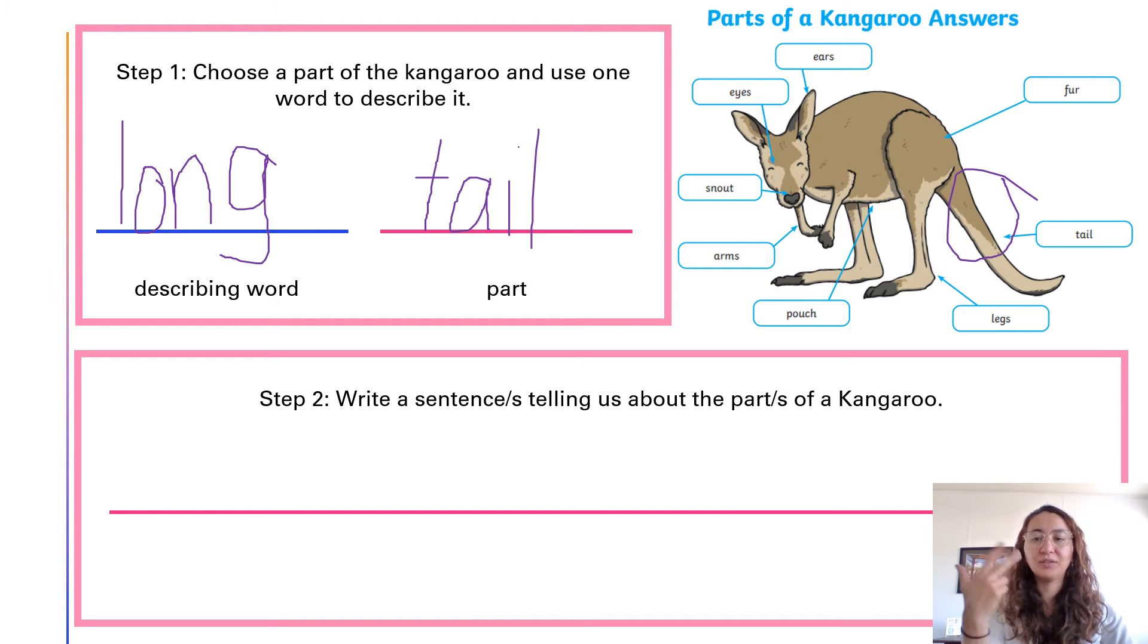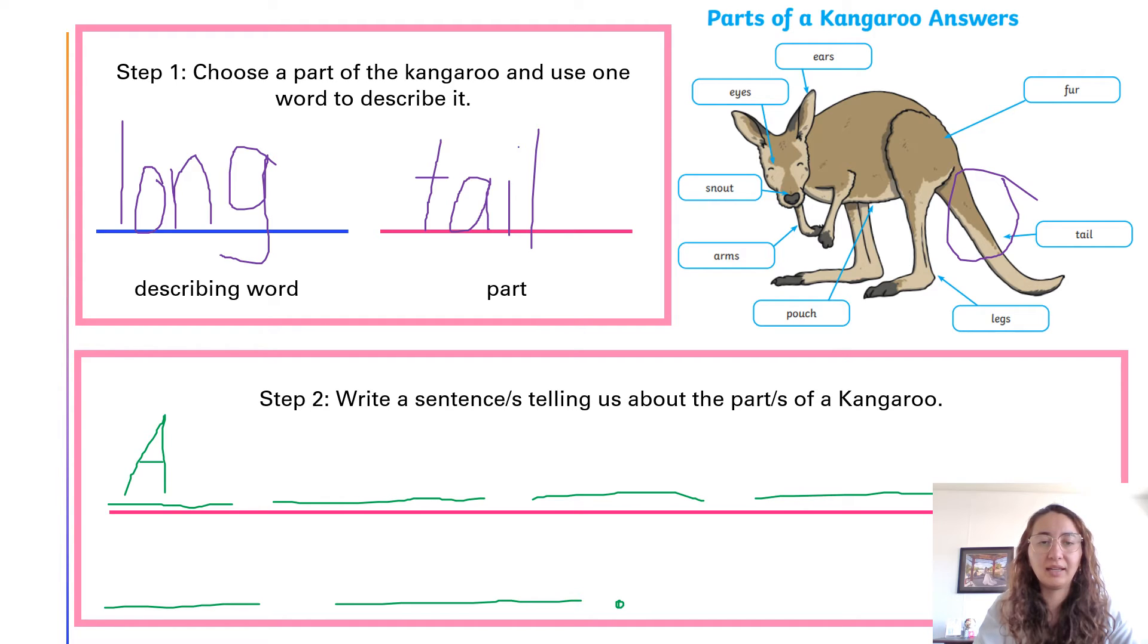So a kangaroo has a long tail. Six words. Six lines. Here we go. A kangaroo has a long tail. Full stop. Now let's write my sentence. A capital because it's the start of my sentence. A kangaroo. Now I see kangaroos here. Kangaroo. So it's right there. A kangaroo. Kangaroo has.